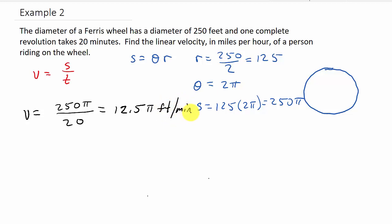Alright, but they don't want the answer in feet per minute. They want it in miles per hour. So now let's convert it. So I've got 12.5 pi, and that's feet per one minute, okay.